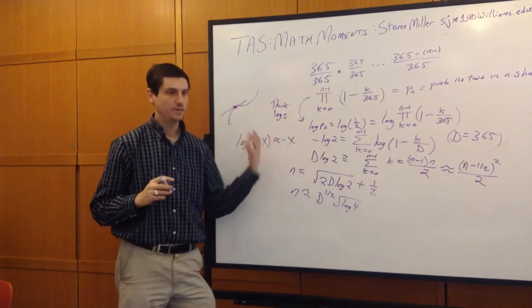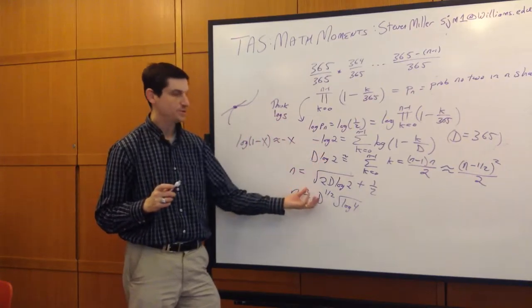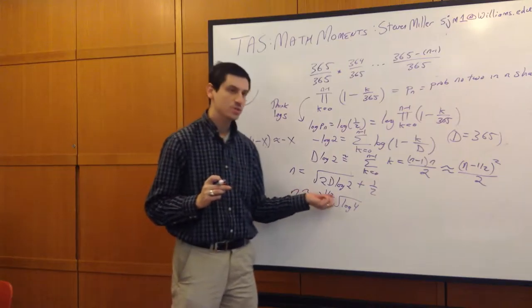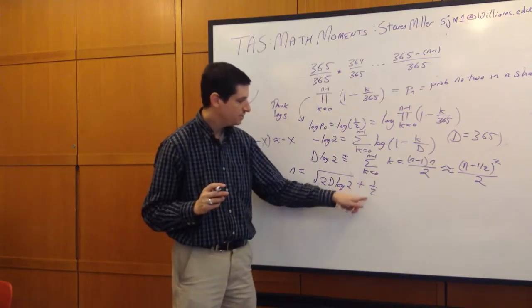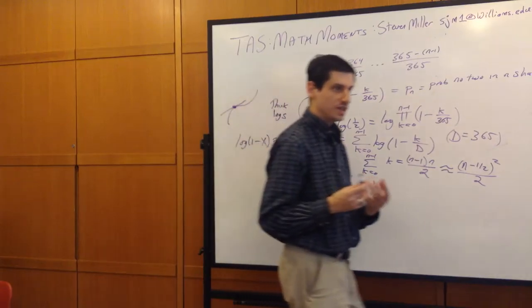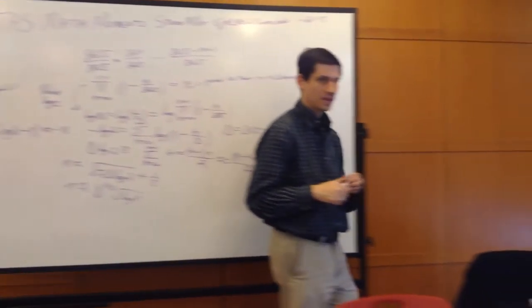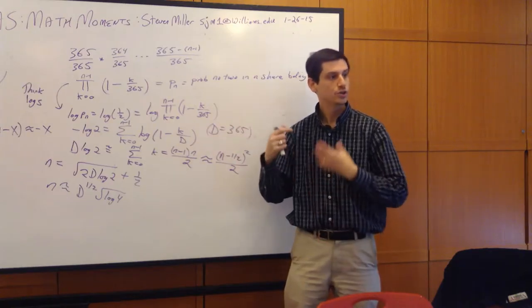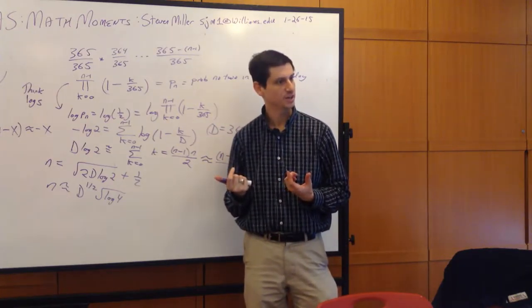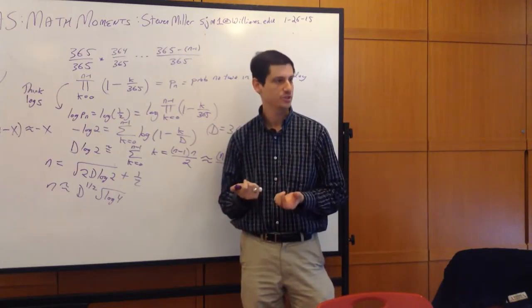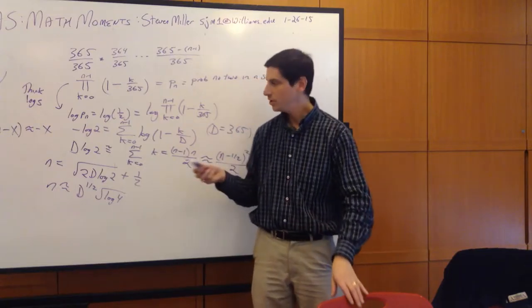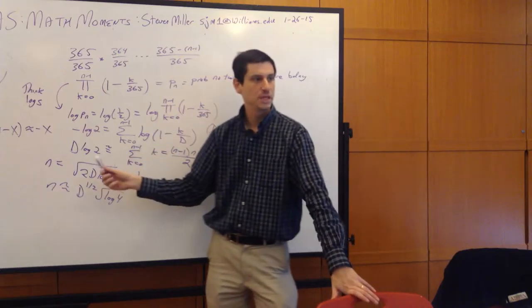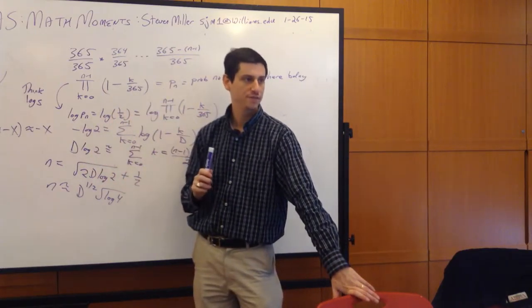This gives a rough idea of how n scales with d — it grows like the square root of d. You can take d equals 365 and try either formula to see how well it predicts the birthday problem answer. There are lots of other generalizations: two pairs sharing a birthday, three people sharing a birthday, or the median number of people needed for 50% probability.